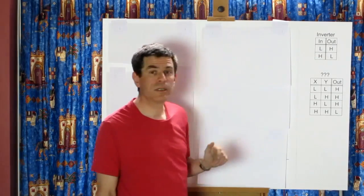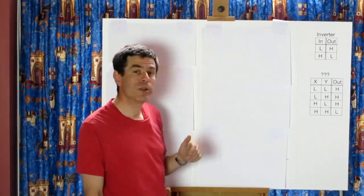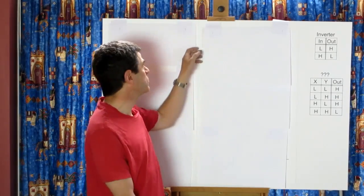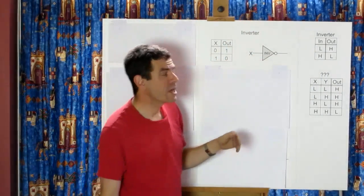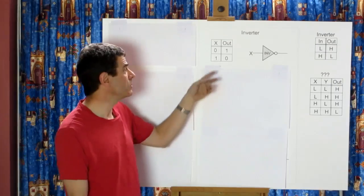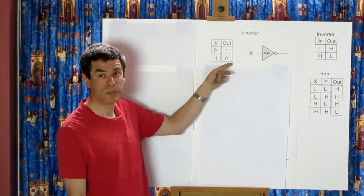Now if we have a look at what a table for an inverter might look like with values of 0 and 1, we get something like this. So we get out the opposite of what we put in. So 0 in, 1 out, 1 in, 0 out.